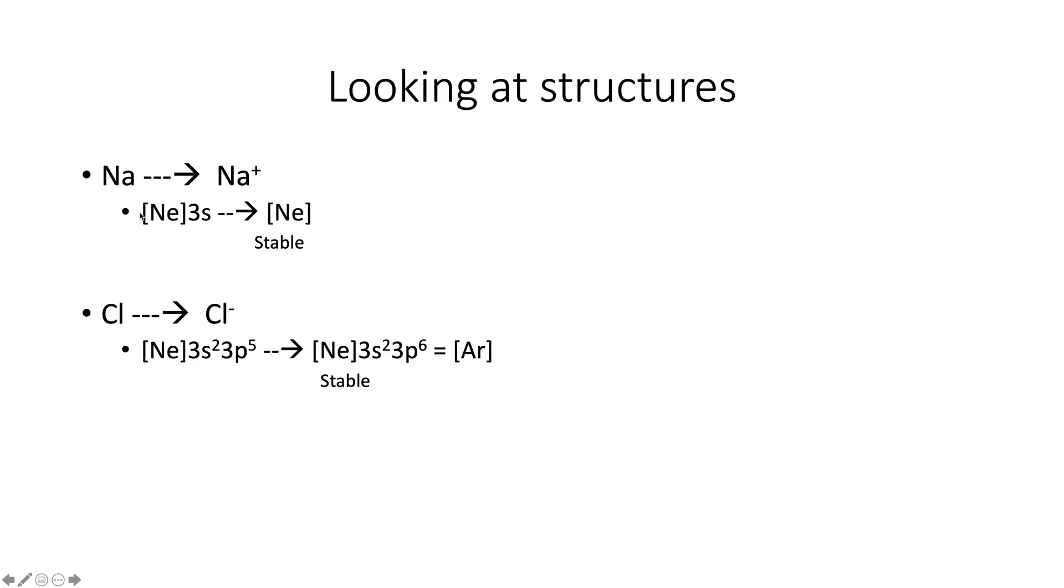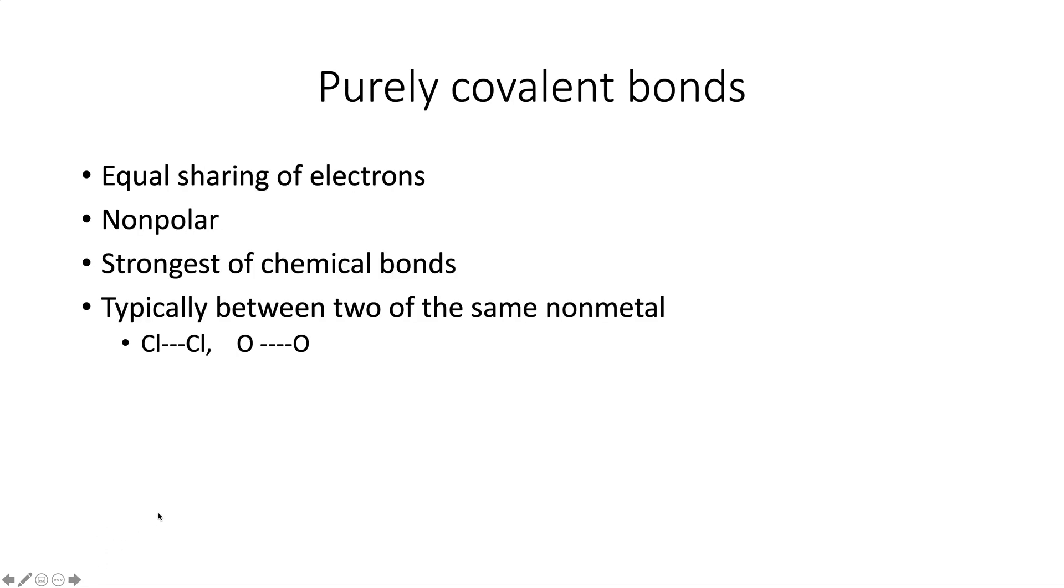When sodium loses an electron, it goes from 3s1 to a neon configuration, which is very stable. When chlorine gains an electron, it goes from 3s2 3p5 to 3s2 3p6, which is also an argon configuration. So the electron transfer results in ions with very stable structures. So separating them gives us things that are still stable.